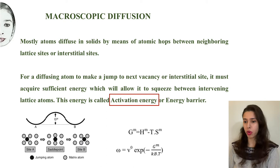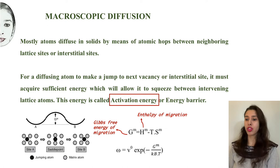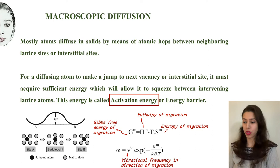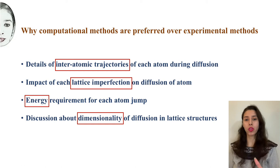Here, G is the entropy of migration, H is the enthalpy of migration, and W-naught is the vibrational frequency in the direction of migration. Now, why are computational methods preferred over experimental methods?